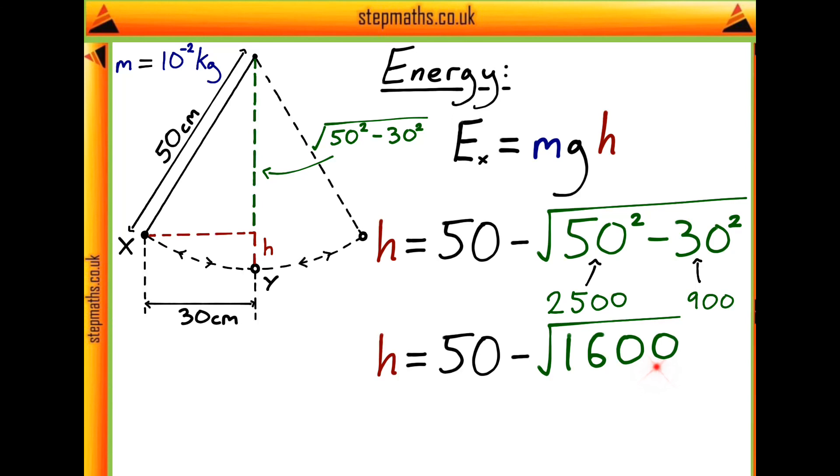Now, converting this into standard form is probably the easiest way to go. And it will give you that this square root of 1,600 is 40 centimetres. And therefore, the height that our bob falls, h, is going to be given by 10 centimetres.